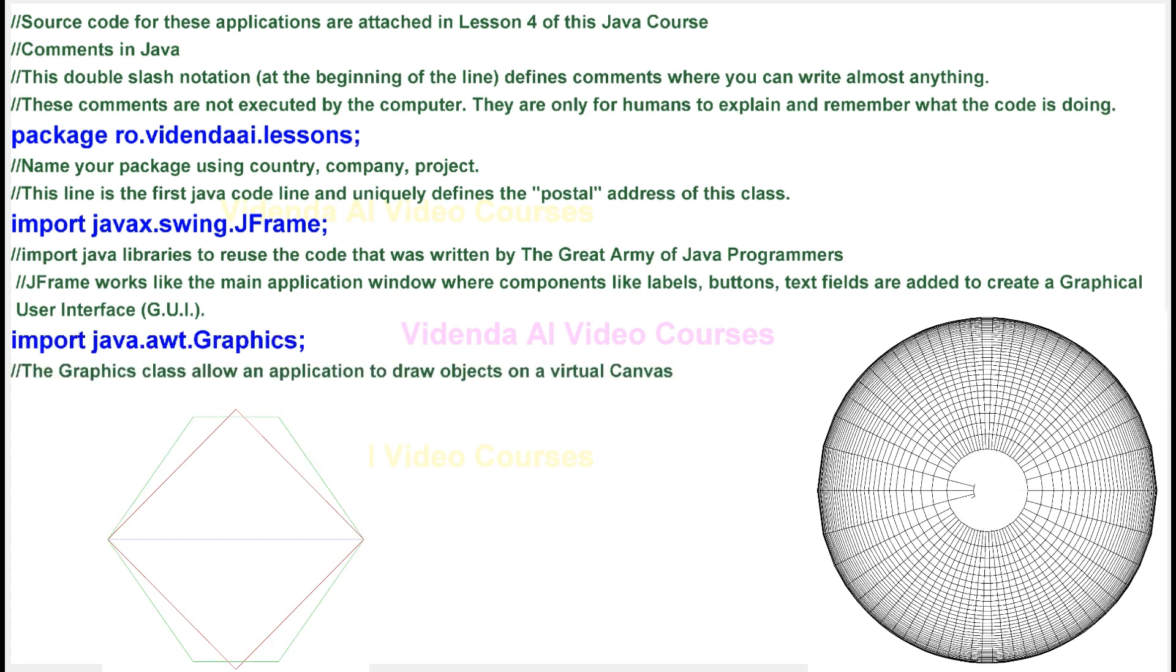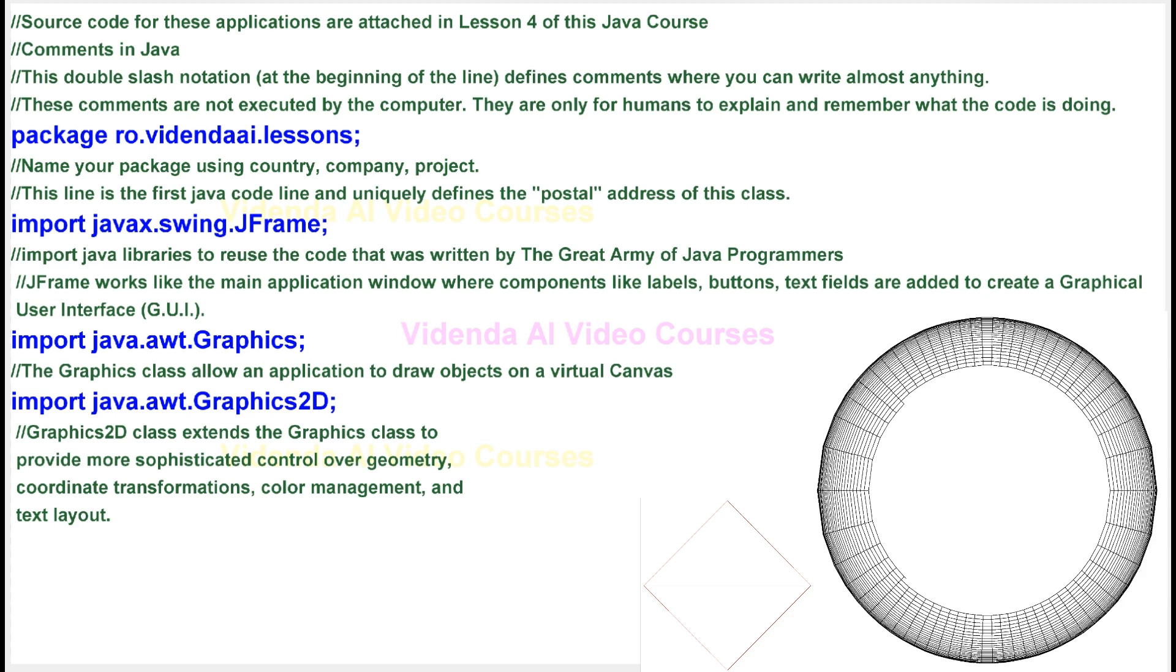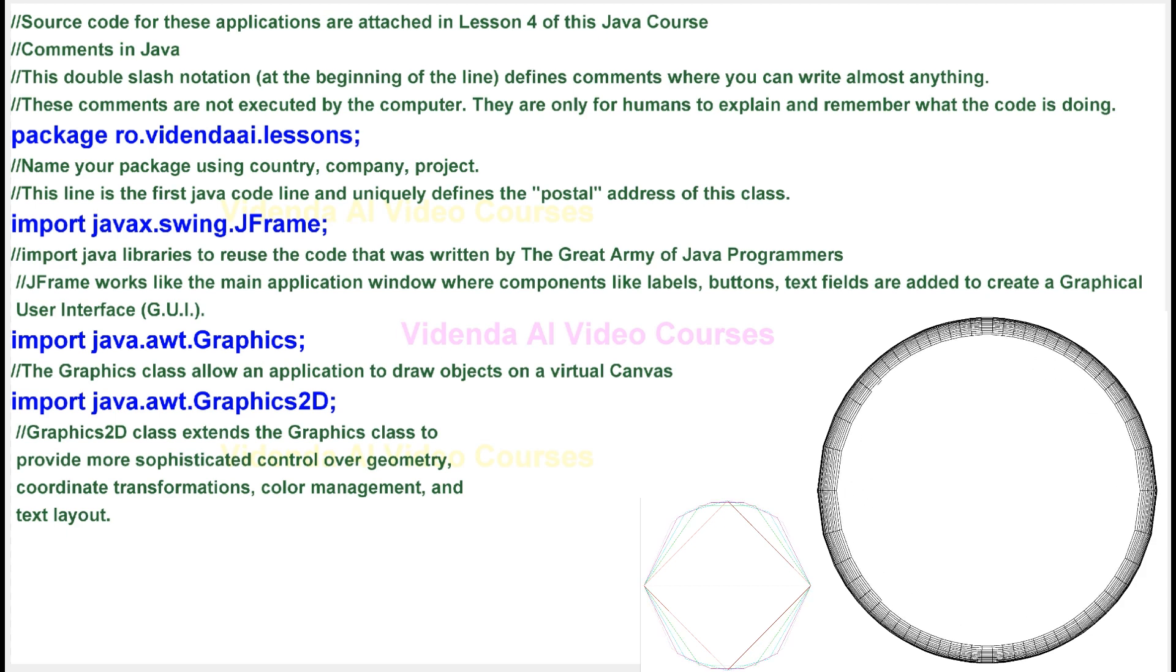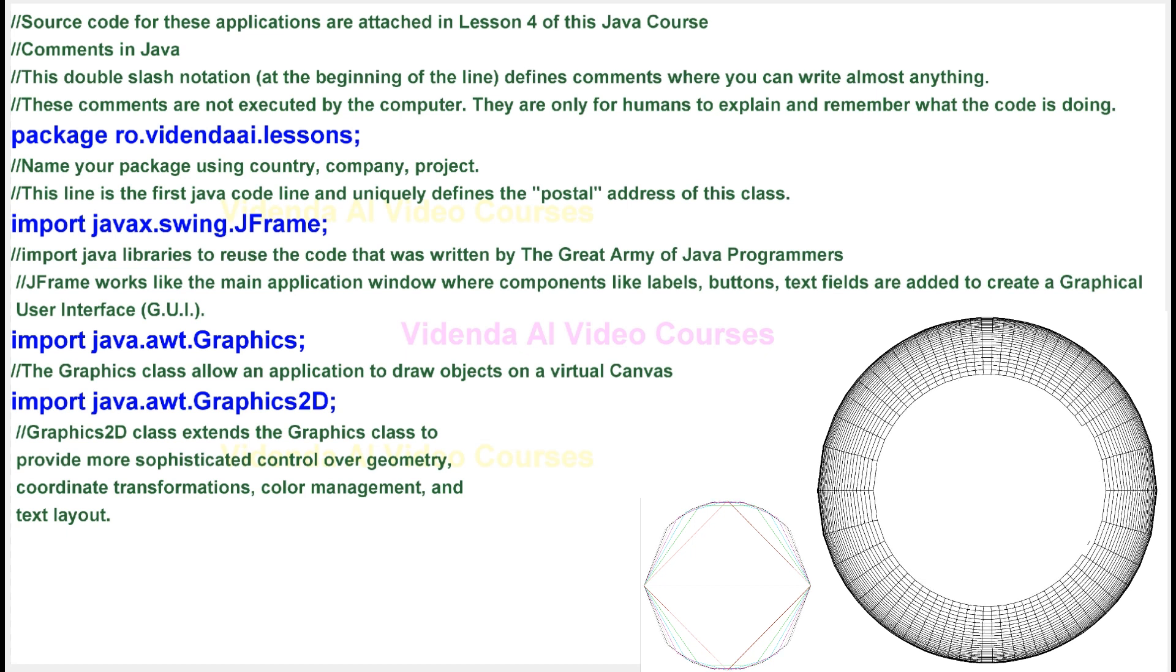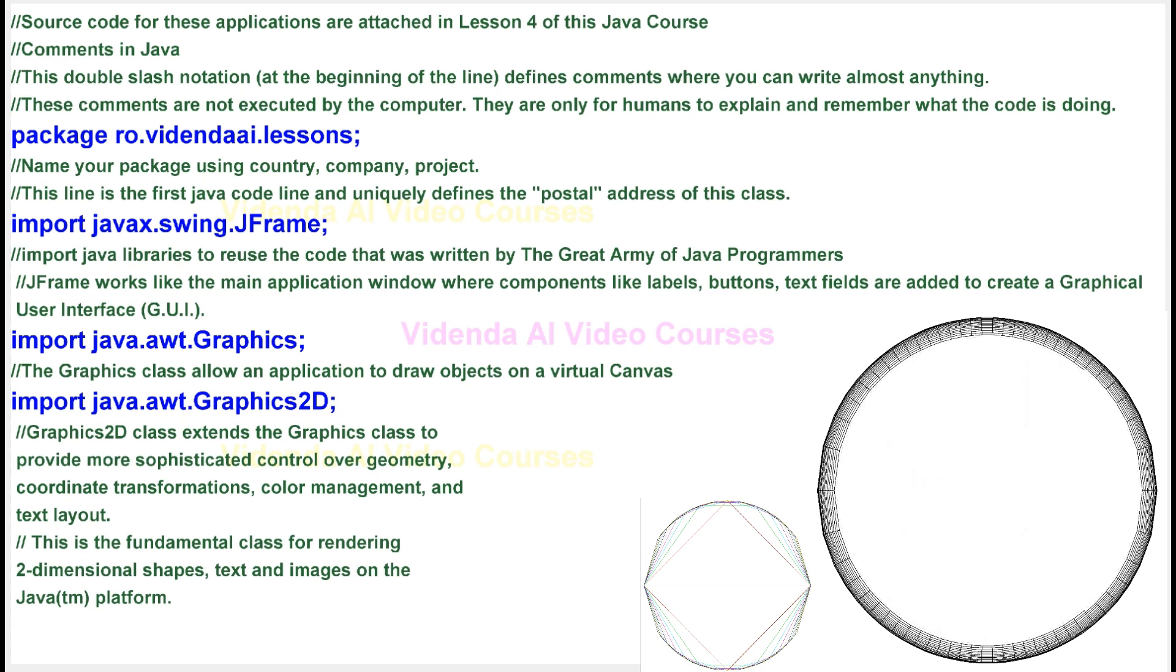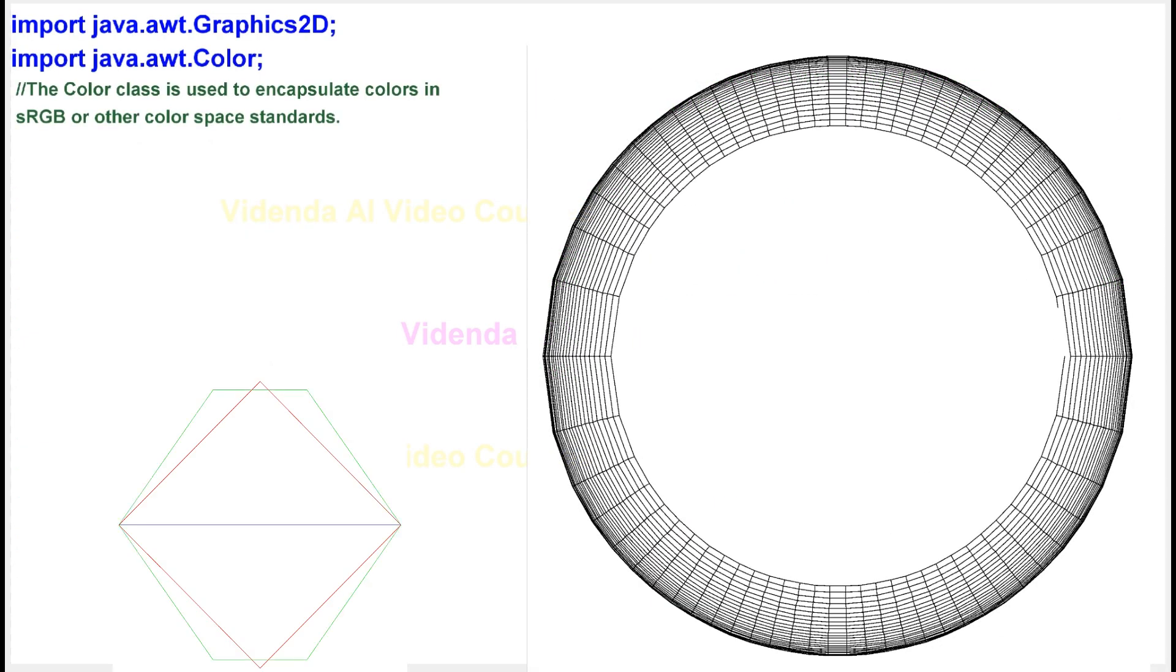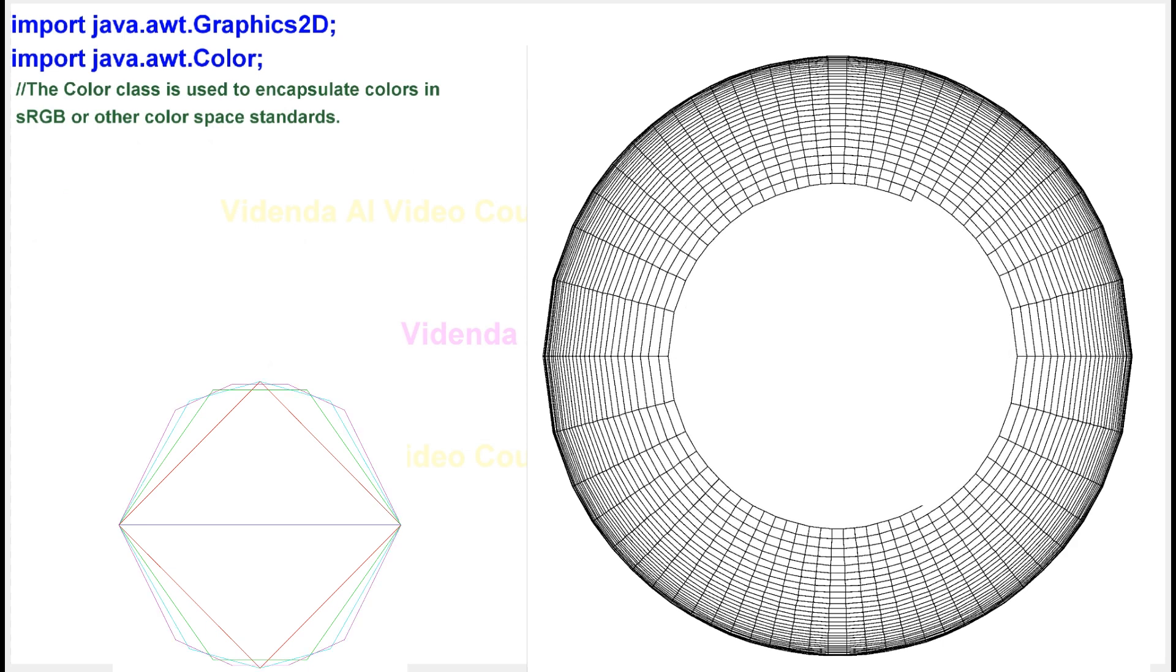The Graphics class allows an application to draw objects on a virtual canvas. Graphics2D class extends the Graphics class to provide more sophisticated control over geometry, coordinate transformations, color management, and text layout. This is the fundamental class for rendering two-dimensional shapes, text, and images on the Java platform. The Color class is used to encapsulate colors in sRGB or other color space standards.